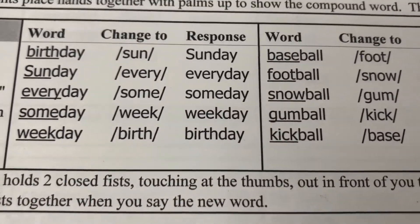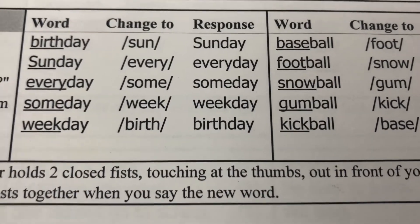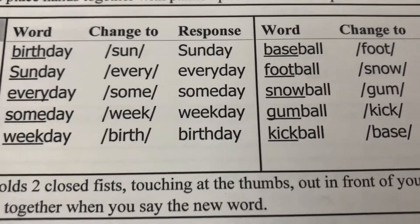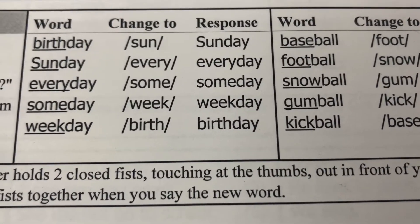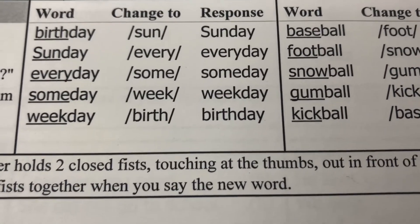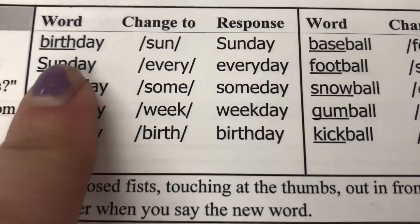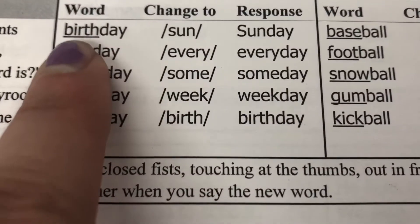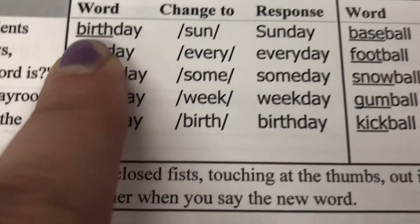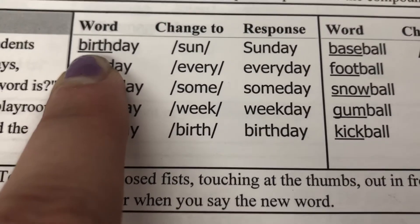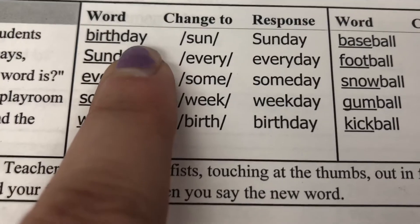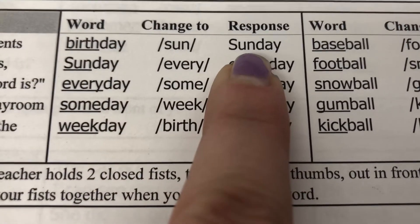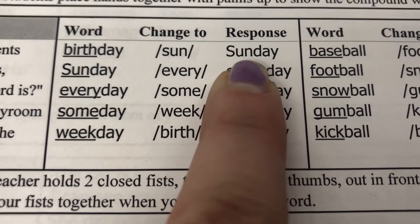Now we're going to do our last activity which is substituting words. I'm going to say the word and students would repeat the word, then I'll say change a word to another word. Keep in mind we're substituting the first part of the word, which is underlined. So we have birthday — change birth to sun — and the word is: Sunday.